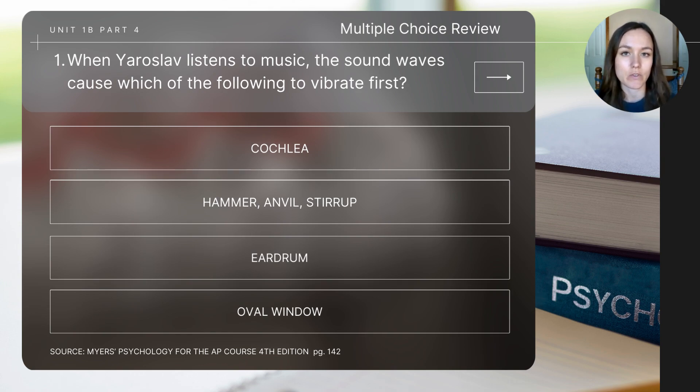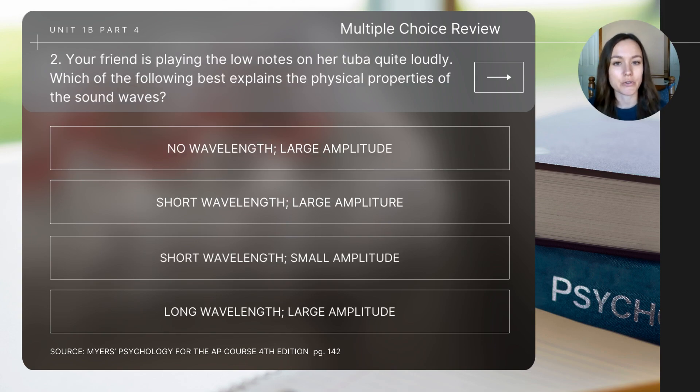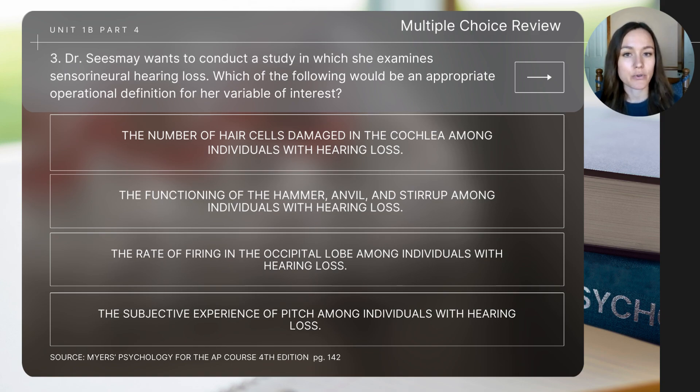So let's finish today's video with a few questions for review. Remember to pause the video after the question to determine the answer, and then at the end of the video I'll display the correct answers for you to check. Question number one says, when Yaroslav listens to music, the sound waves cause which of the following to vibrate first? Question number two says, your friend is playing the low notes on her tuba quite loudly. Which of the following best explains the physical properties of the sound waves? Question number three says, Dr. Sisme wants to conduct a study in which she examines sensorineural hearing loss. Which of the following would be an appropriate operational definition for her variable of interest.